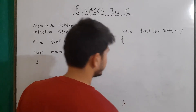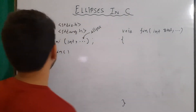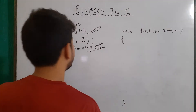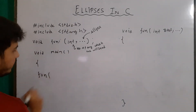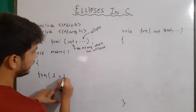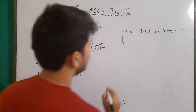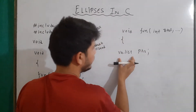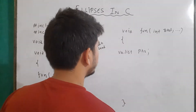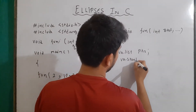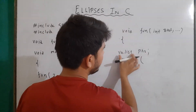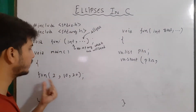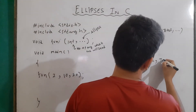Inside the function we will write the definition. Whenever we are using ellipses, in the first place we have to write the number of arguments that we are going to send. Let's say I'm calling the function fun with two values — the first value is 10 and the other is 20. Now, we will make a va_list pointer. ptr is a pointer of type va_list, and remember that va_list here is a macro. Then we write va_start, and inside it we write first the name of our va_list pointer — ptr — and then the last named argument before the ellipsis, which is total.